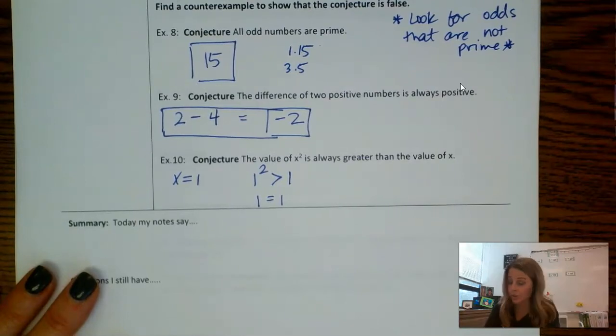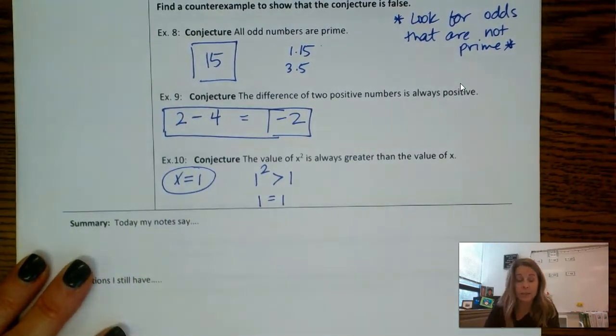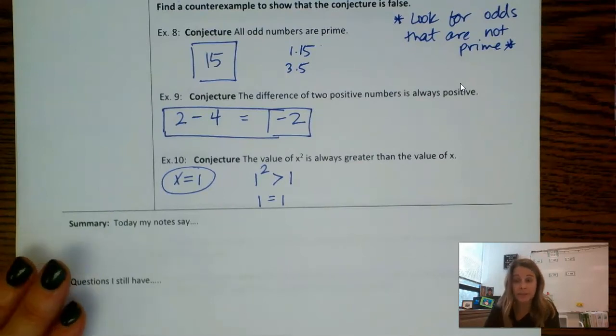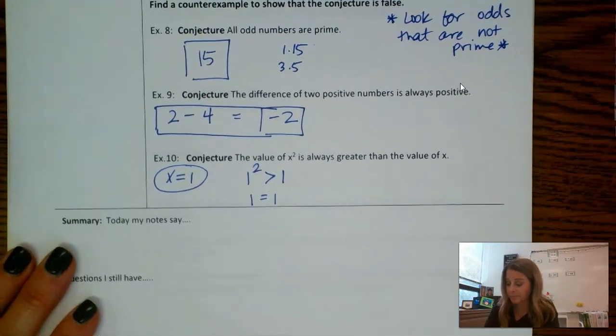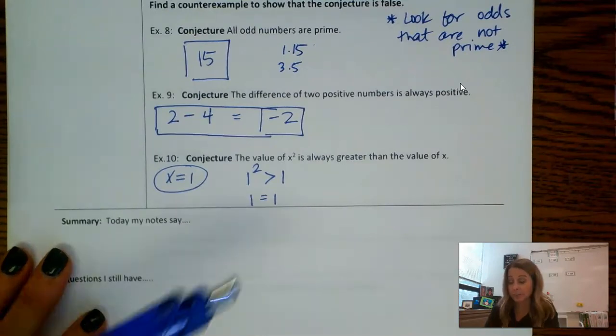So my conjecture is that the value of x squared is always greater than the value of x. So I'm going to say, well, no, my counterexample is x equals 1. Zero would also be a valid counterexample.